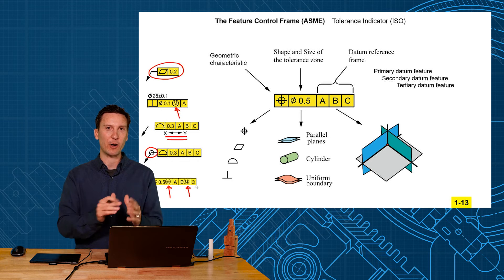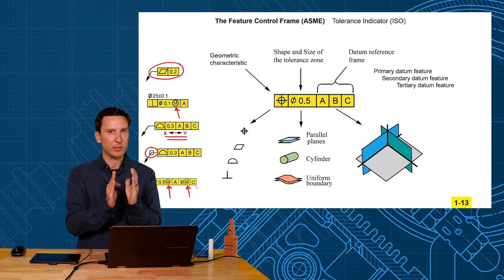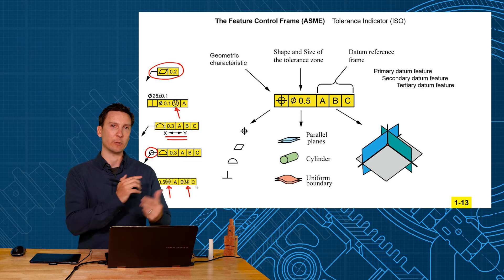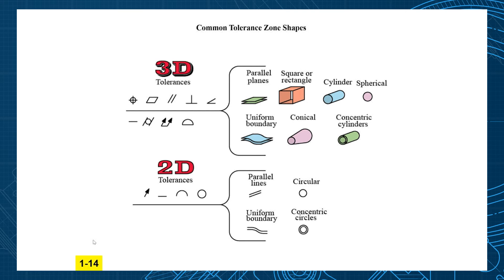For the introduction, feature control frame has three compartments. What do you want to do? Size and shape of the zone, and relative to what datum reference frame. The tolerance zones - the main shapes are parallel planes and cylindrical zones. But there are ways to make spherical zones, concentric cylinders, conical zones, jelly bean zones, whatever shape you want. There's 3D tolerances that create three-dimensional tolerance zones and 2D tolerances that create parallel lines instead of planes, circles instead of cylinders.